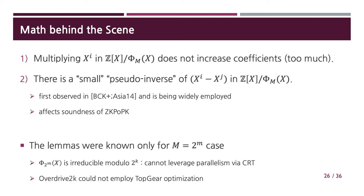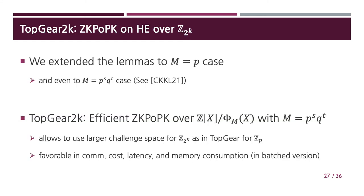In this work, we extended the lemmas to the prime case. And in a follow-up work, we extended them even further to the case where M has two or fewer prime factors. With these new generalizations, we propose TopGear2K, which allows us to use a larger challenge space for Z2K messages as in TopGear for prime field messages. Indeed, our ZKPoK enjoys the same advantages as the original TopGear protocol.